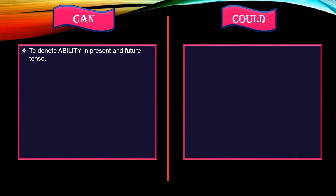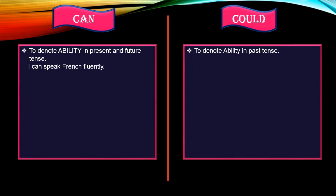The most common use of 'can' is to denote ability in present and future tense. For example: 'I can speak French fluently' — the speaker has the capability of speaking French fluently. 'Could' is used to denote ability in past tense. For example: 'I could run 10 miles when I was young' — here he is talking about a past event.